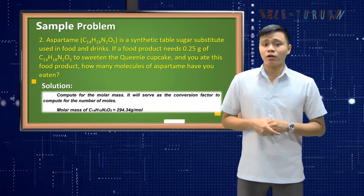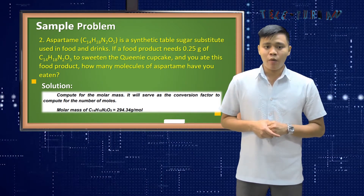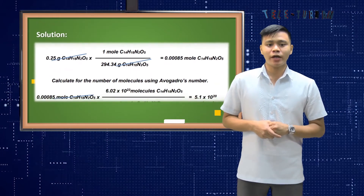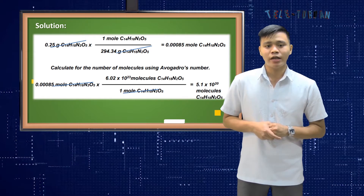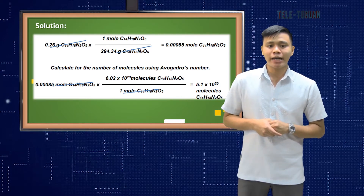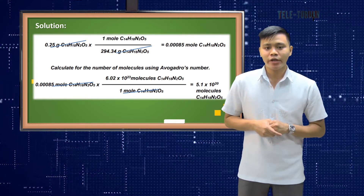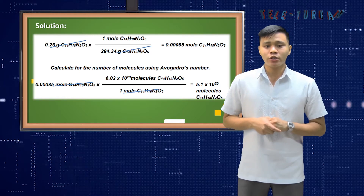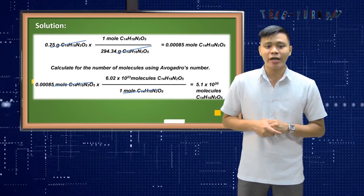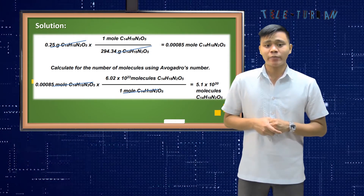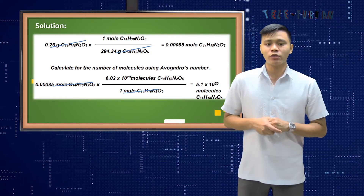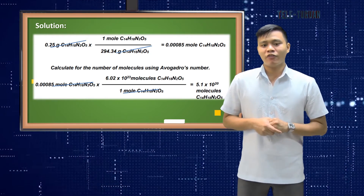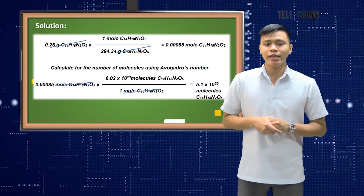Compute for the molar mass — it will serve as the conversion factor to compute for the number of moles. The molar mass is equal to 294.34 grams per mole. Then: 0.25 grams of C14H18N2O5 times 1 mole divided by 294.34 grams equals 0.00085 mole of C14H18N2O5. Now calculate the number of molecules using Avogadro's number: 0.00085 mole times 6.02 × 10²³ molecules divided by 1 mole equals 5.1 × 10²⁰ molecules of C14H18N2O5.